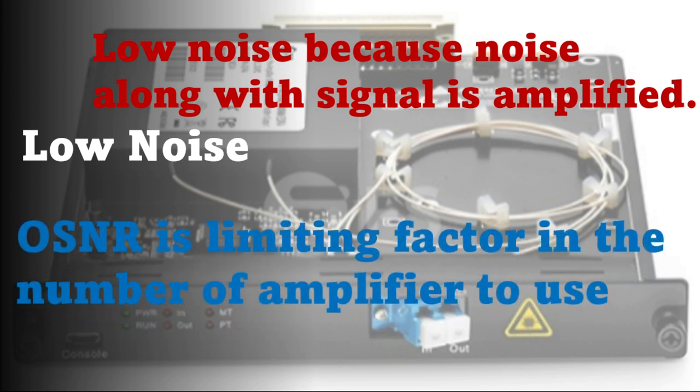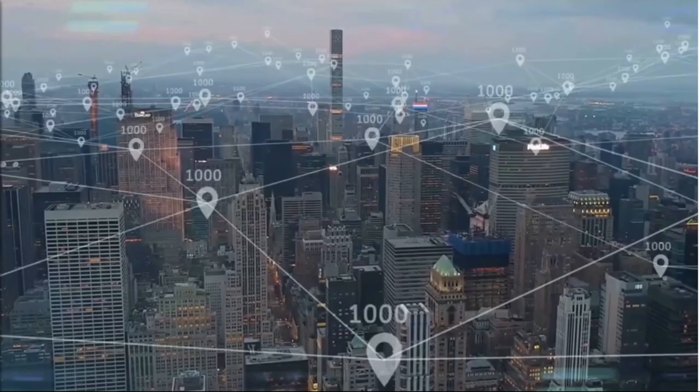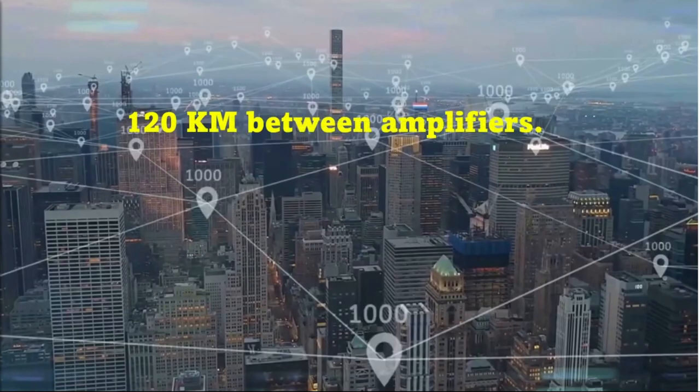OSNR, that is optical signal to noise ratio, is a limiting factor in the number of amplifiers that can be concatenated. In practice, signals can be traveled for up to 120 km between amplifiers.